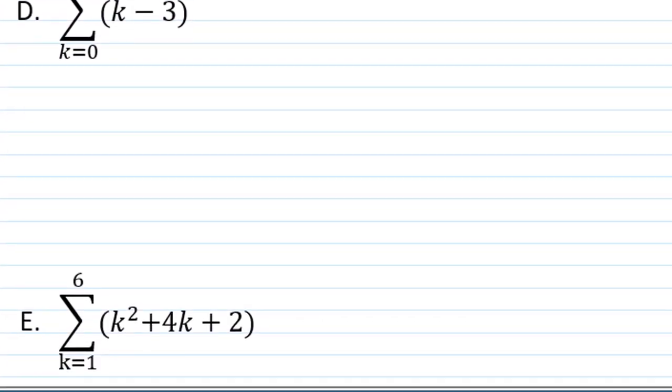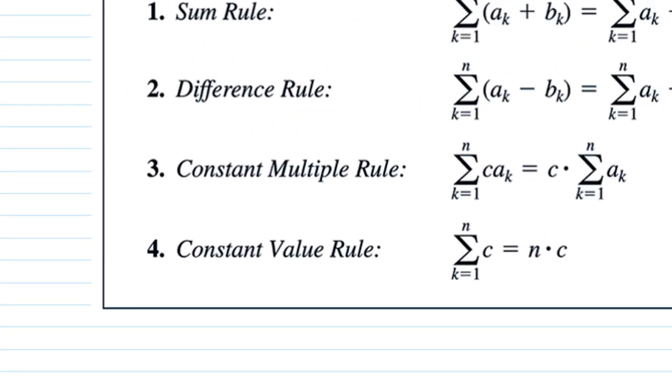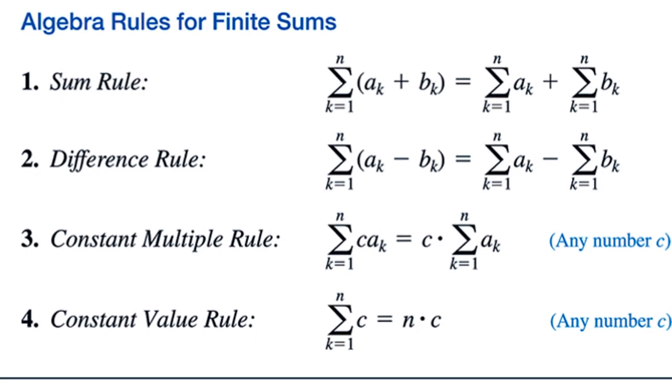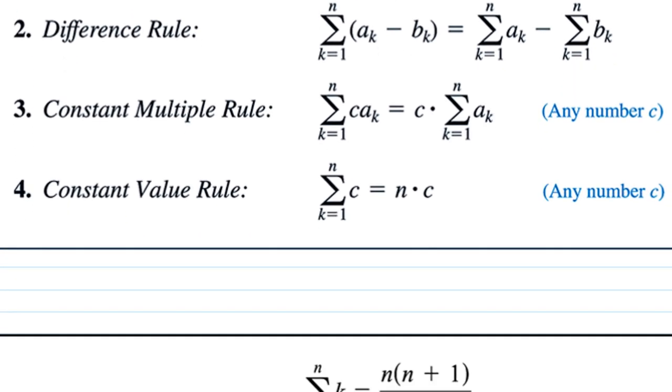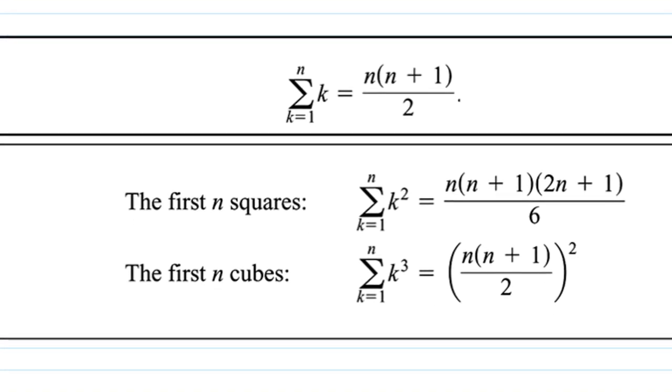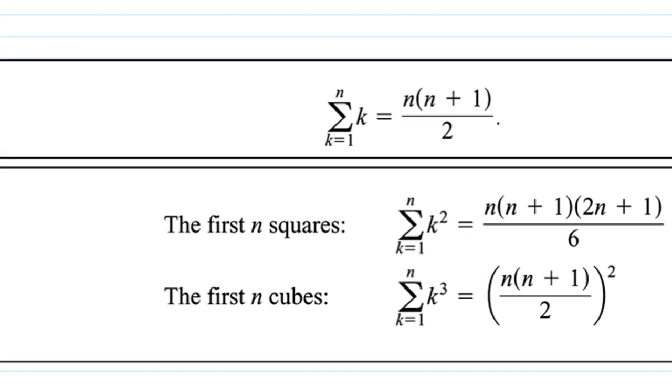We're going to use some algebraic rules for finite sums: sum rule, difference rule, constant multiple rule, and constant value rule. And we're also going to use a couple of formulas for the sum of k, the sum of k squared, and the sum of k cubed.